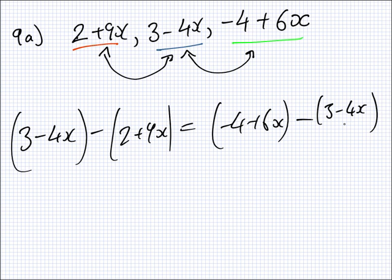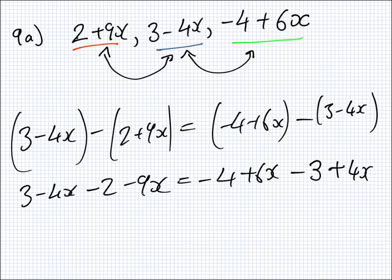So, that means 3 minus 4x minus 2 plus 9x. That should equal minus 4 plus 6x minus 3 minus 4x. Because we're saying the difference of the first two is the same as the difference for the next two. They're equal difference. I think you get the idea here? You get it?